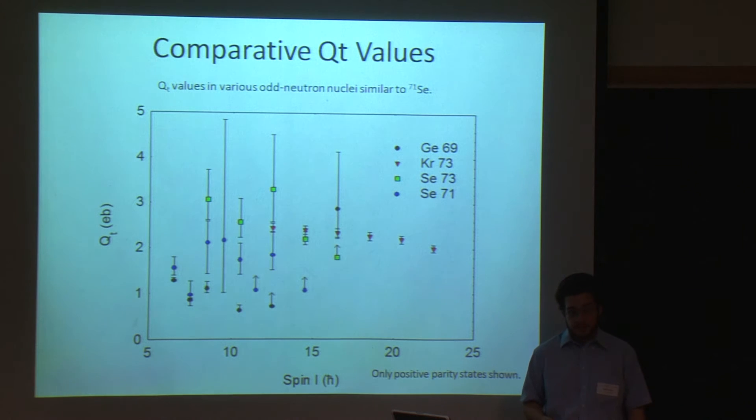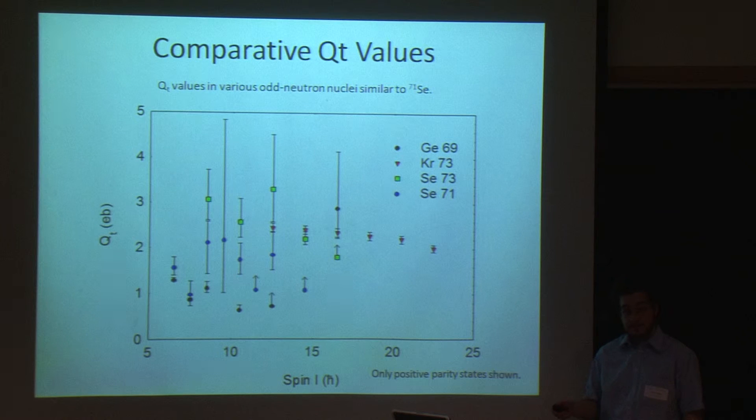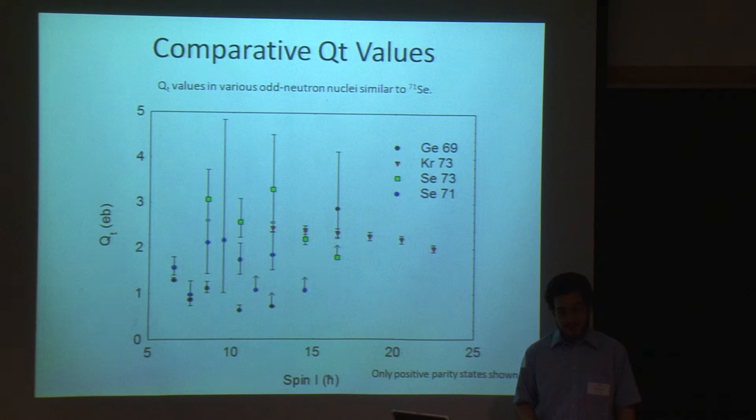What I thought was a little more enlightening, though, was to compare them to known QT values from neighboring nuclei. And all of these have one odd neutron like selenium-71. Krypton-73 and selenium-73 are known to have high collectivity and have high QT values. Germania-69 has low collectivity and low QT values with one outlier. And selenium-71 winds up in the middle. And this confirms what we suspected, that it has a moderate degree of collectivity, which makes it especially nice for studying how the single particle and collective behaviors interact.